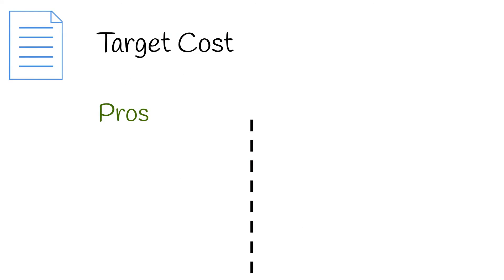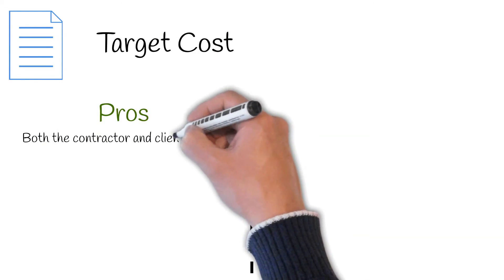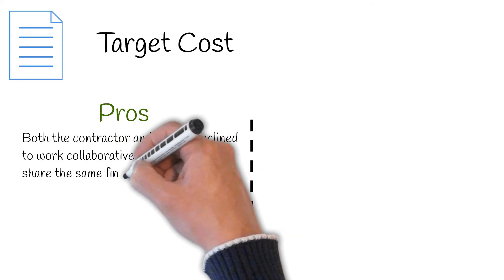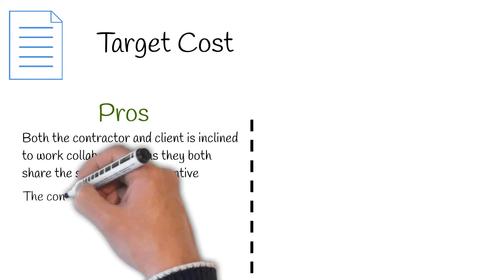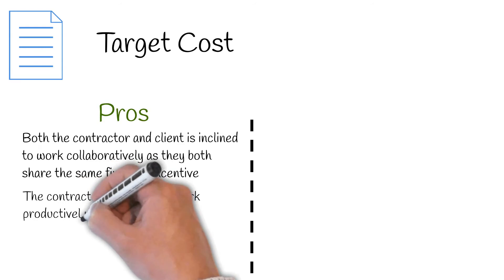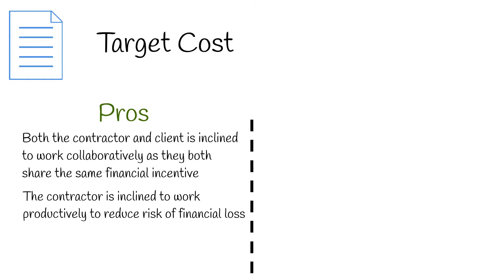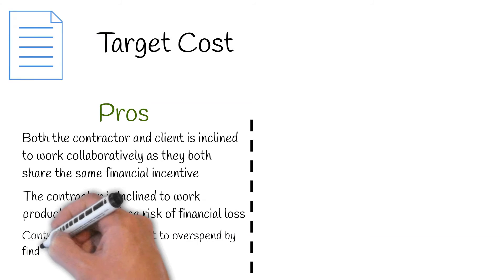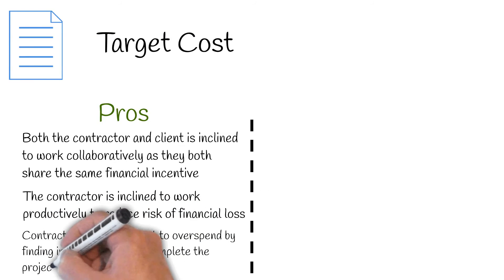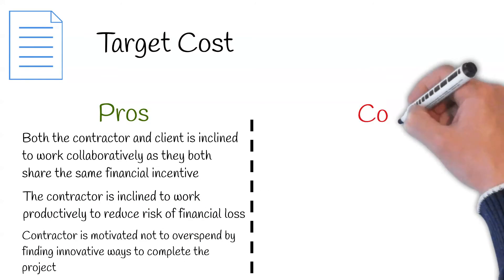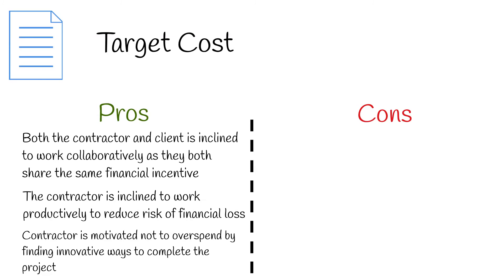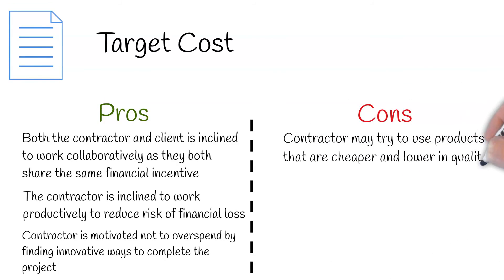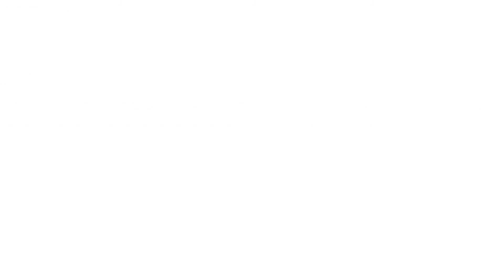Pros to this contract include: both the contractor and client are inclined to work collaboratively as they share the same financial incentive. The contractor is inclined to work productively to reduce the risk of financial loss, and is motivated not to overspend by finding innovative ways to complete the project. Cons to this contract include: the contractor may try to use products that are cheaper and lower quality in order to maximize profit.